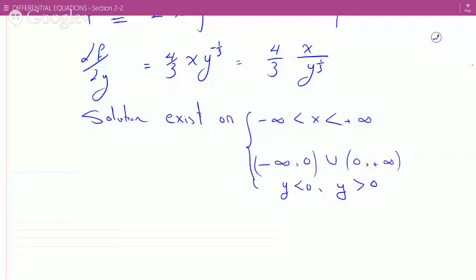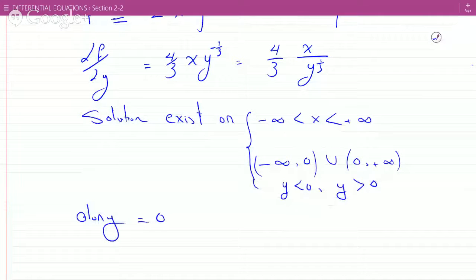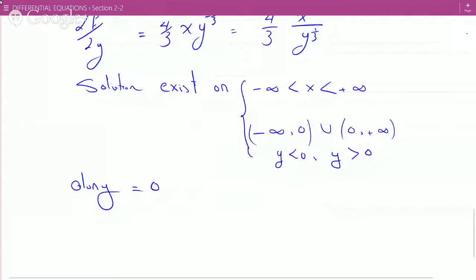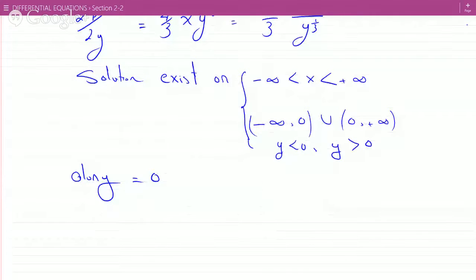So along y equals zero, they don't exist. And what about the existence and uniqueness theorem? So again, the existence and uniqueness theorem will say along y equals zero.